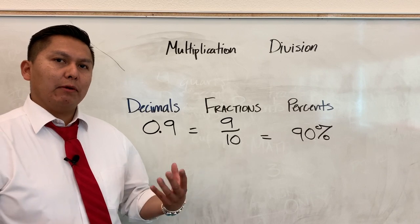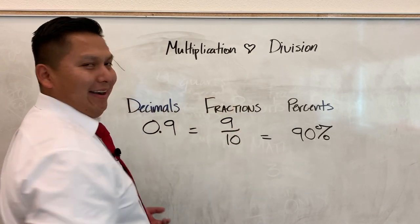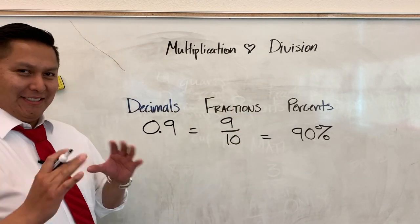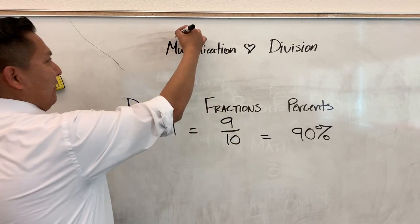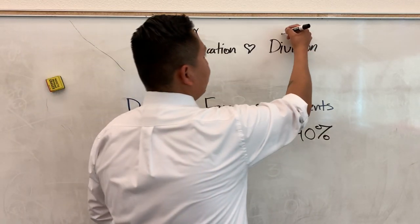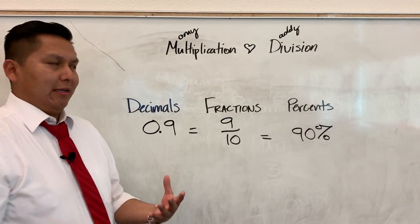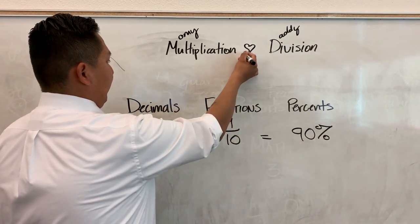Now imagine that multiplication would be like they fell in love. It's kind of goofy, but just hear me out. So they fell in love, and we have the mommy and the daddy. So their children would be out of the love.